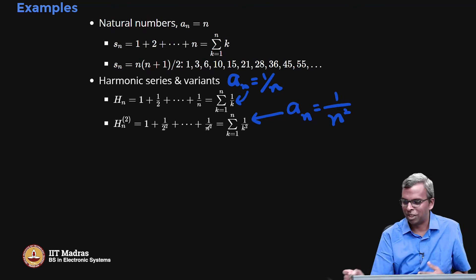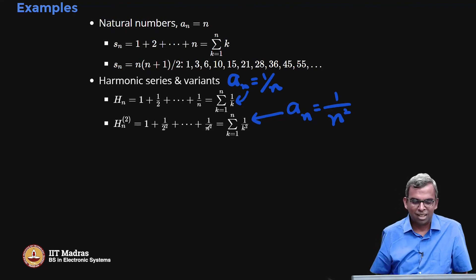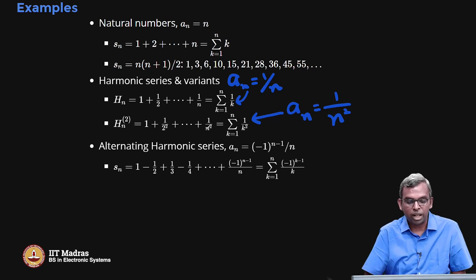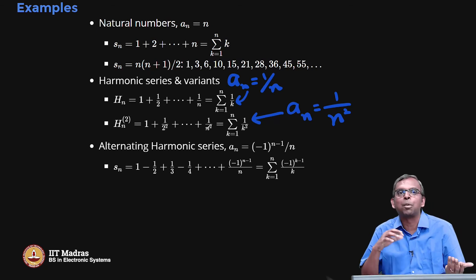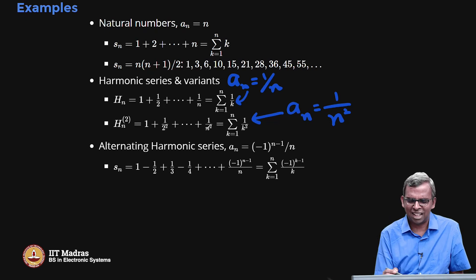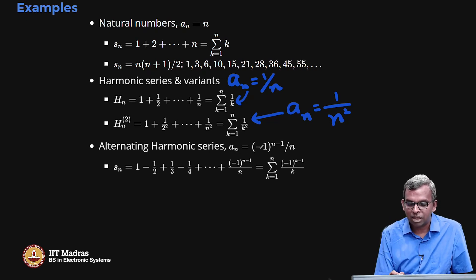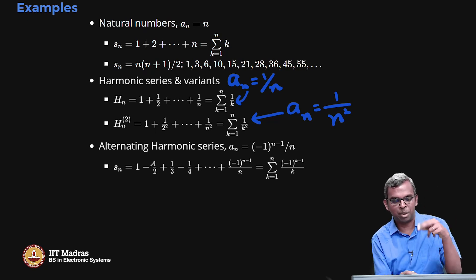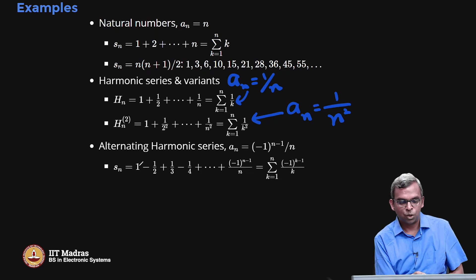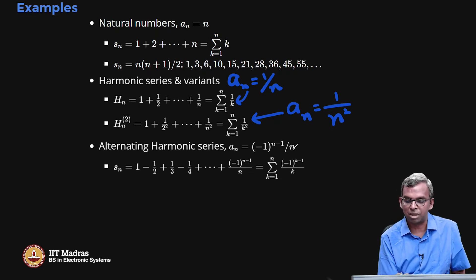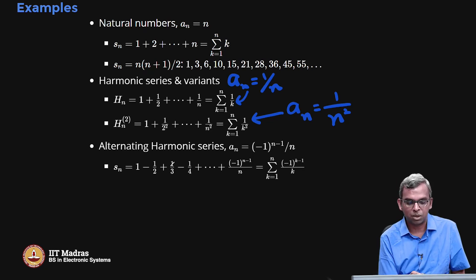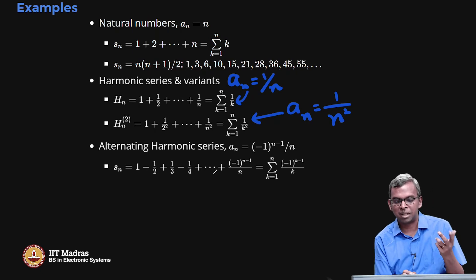Now, instead of just the harmonic series, we can also look at the alternating harmonic series. The sequence a_n is defined as (-1)^(n-1) / n. So instead of just 1/n, you alternate the sign: first you take 1, next minus 1/2, then 1/3, then minus 1/4, and so on. The series from this sequence is called the alternating harmonic series: it goes 1 minus 1/2 plus 1/3 minus 1/4, plus, minus, plus, minus, and so on. It is written as summation over k of (-1)^(k-1) / k.